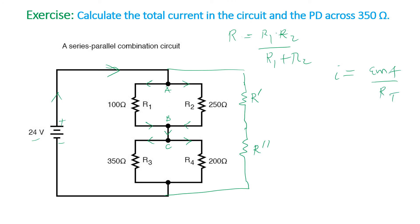After finding the total resistance, calculate the total current using I = EMF over R total. To get the PD across R-prime, multiply the total current by R-prime. The PD across R-double-prime equals I times R-double-prime, and since R3 and R4 are in parallel they have the same PD across them — that PD is the same as the voltage across the 350-ohm resistor.